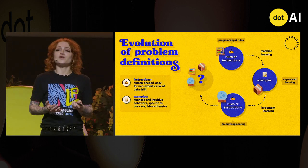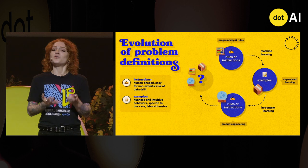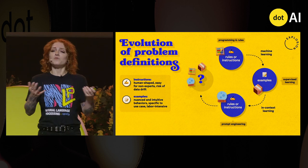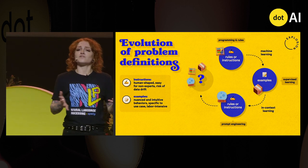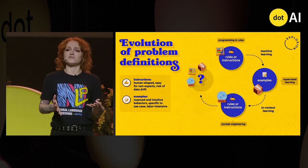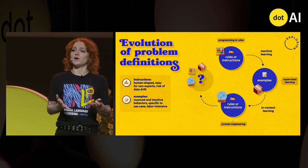So what's the solution? What's coming in the future? How are we going to tell computers what to do, and how can we combine the best of both worlds and build better systems that way?